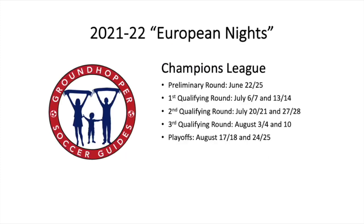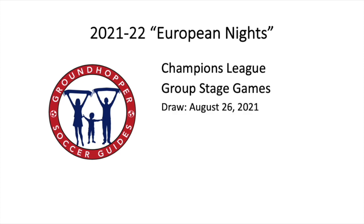For the Champions League, these are all called European Nights — all these games will be in the evening time. The Champions League has a series of preliminary rounds in June, July, and August. These are not going to involve any of the bigger teams you've probably heard of. All your English, German, French, Italian, and Spanish clubs in the Champions League will go straight into the group stage. The group stage draw will be held on August 26th, 2021 — that's when we'll find out who is playing against whom and where.